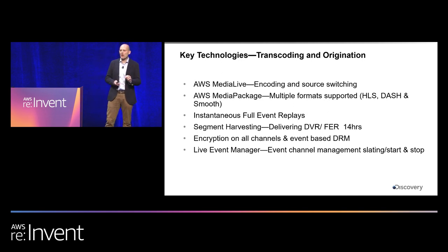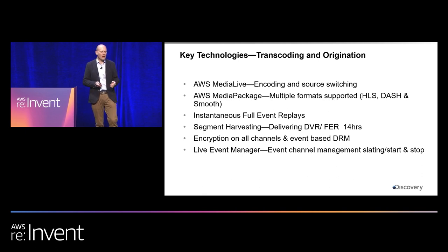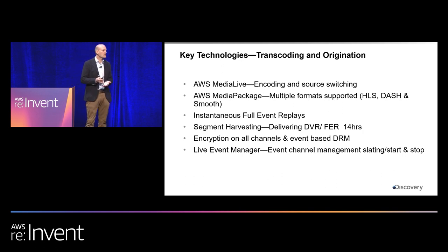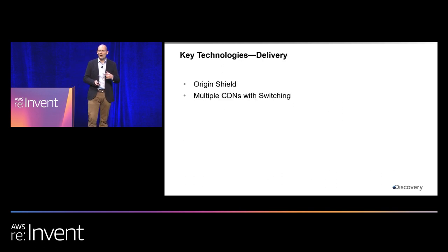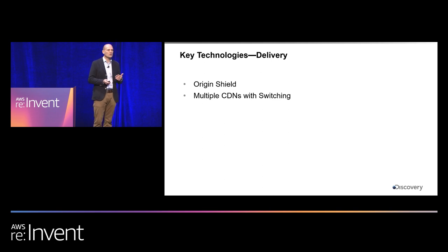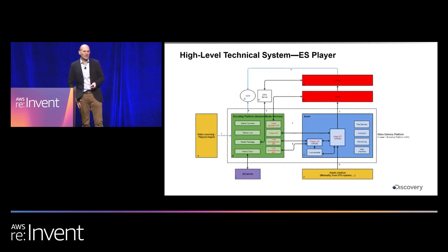We developed a Live Event Manager — an in-house system — which enables us to start and stop channels so we're not paying for compute when not needed. It also enables slating, adding bugs and graphics to the stream in the cloud. To protect our origin, we have an origin shield that caches segments for efficient use of our multi-CDN network. We use multi-CDNs to ensure resiliency and improve last-mile delivery quality to the consumer.